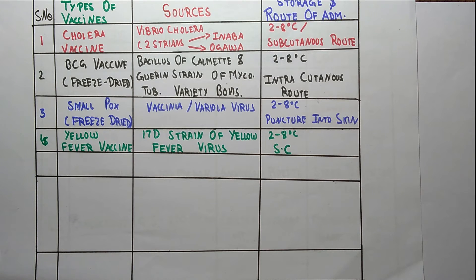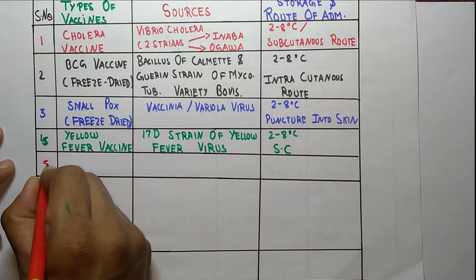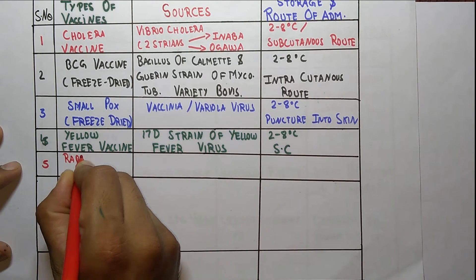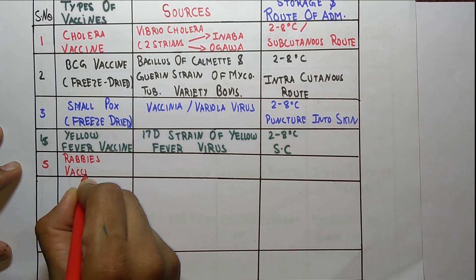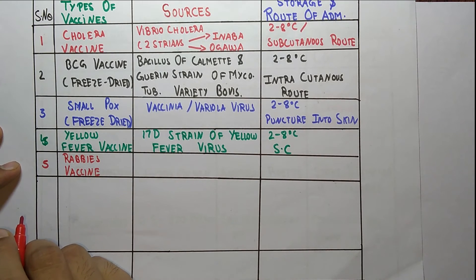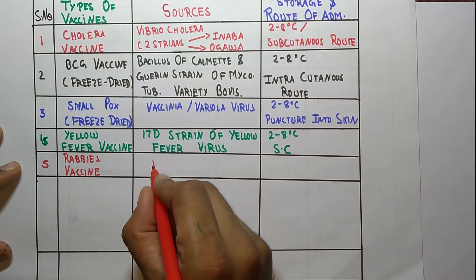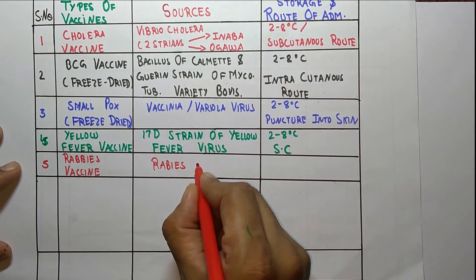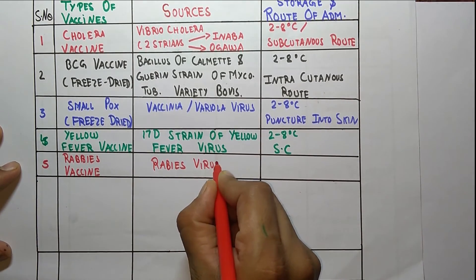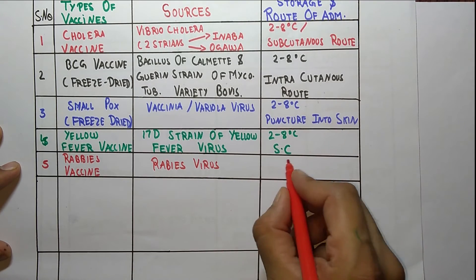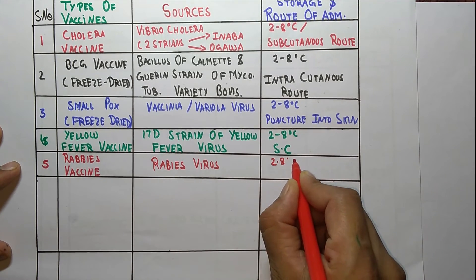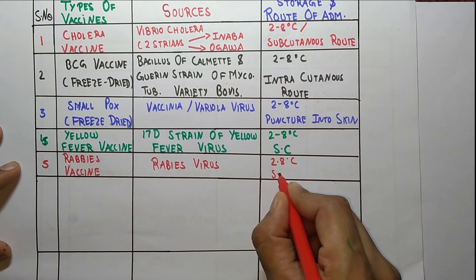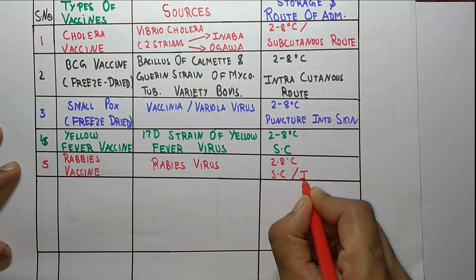The fifth vaccine is the rabies vaccine. The source of the rabies vaccine is the rabies virus. The storage temperature is the same — 2 to 8 degrees Celsius — and it is administered by the subcutaneous or intramuscular route.